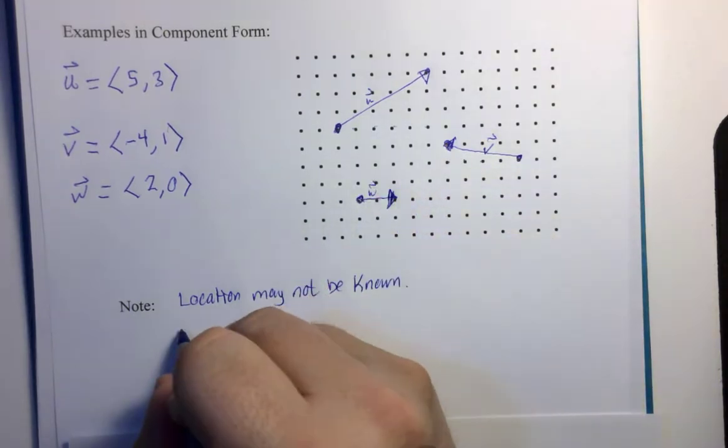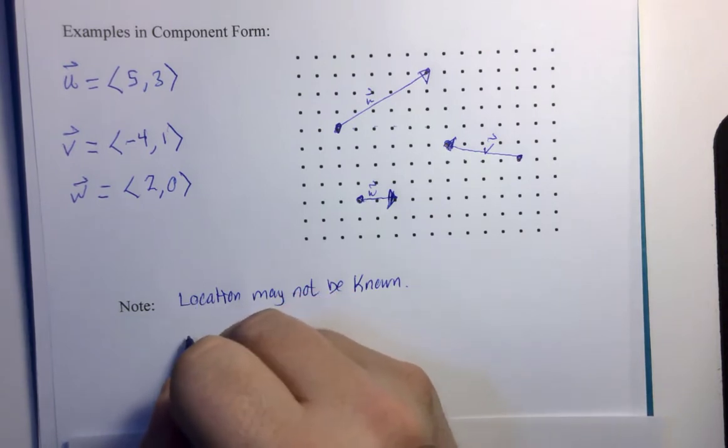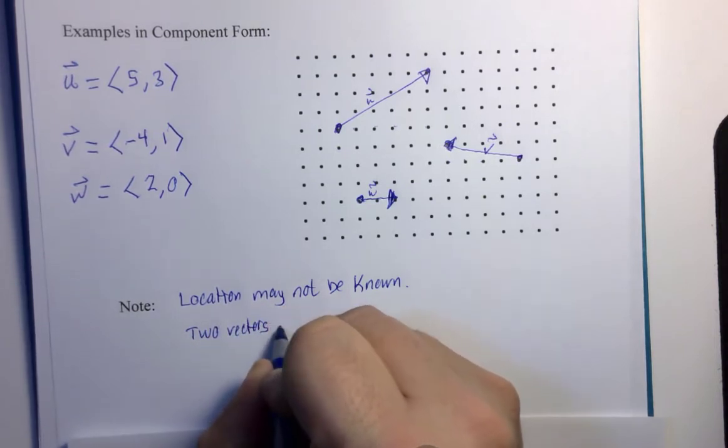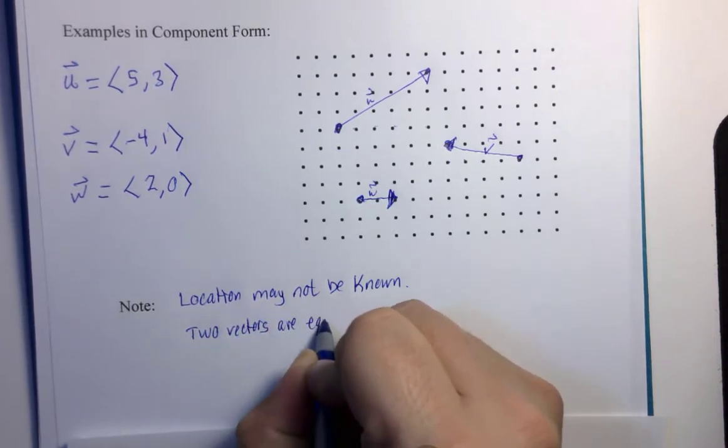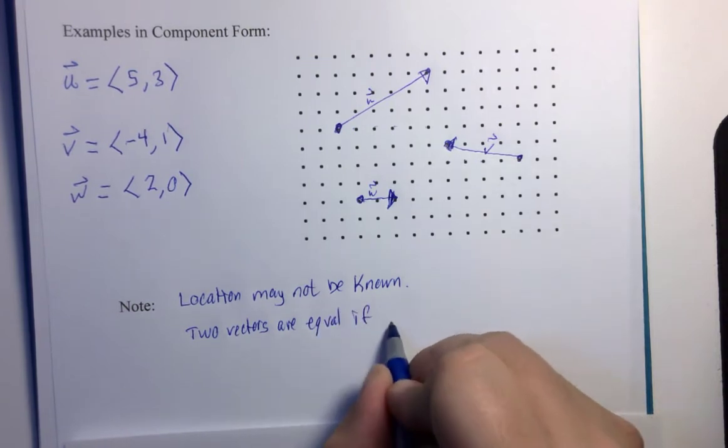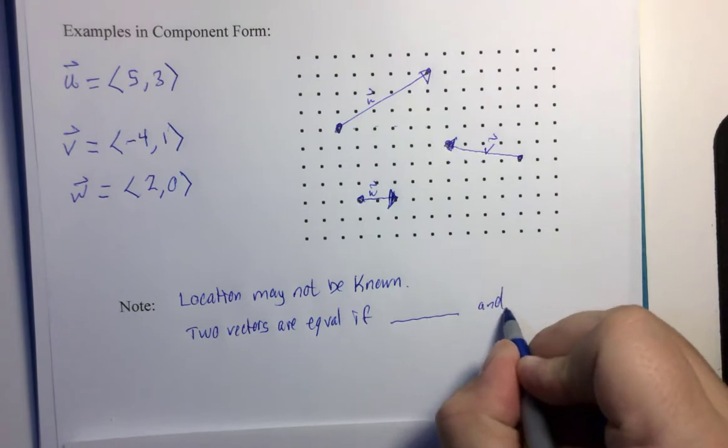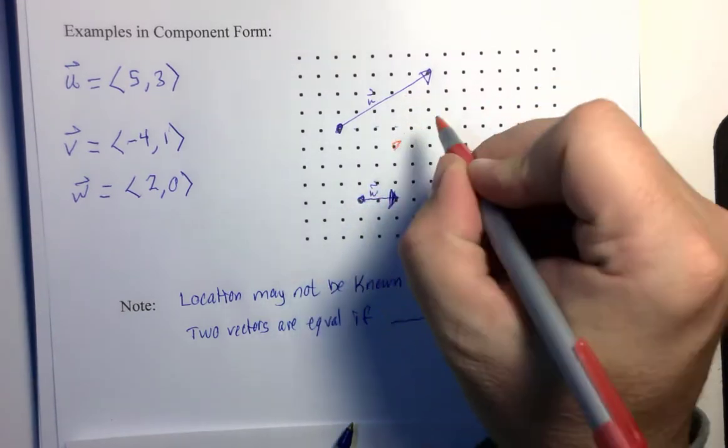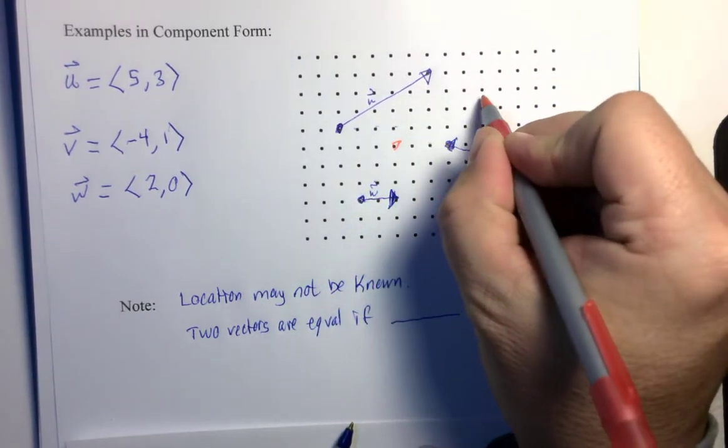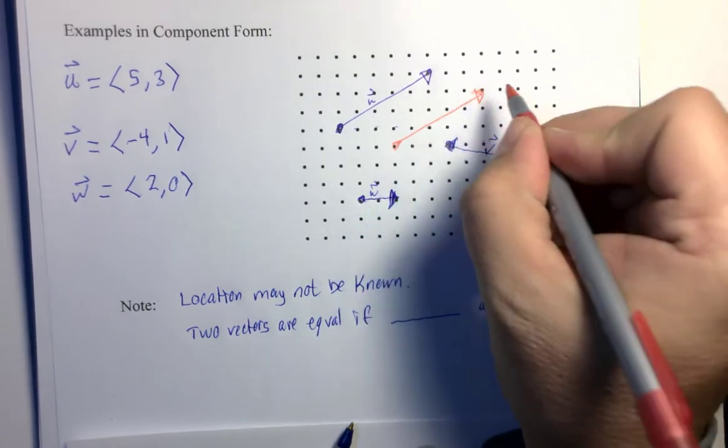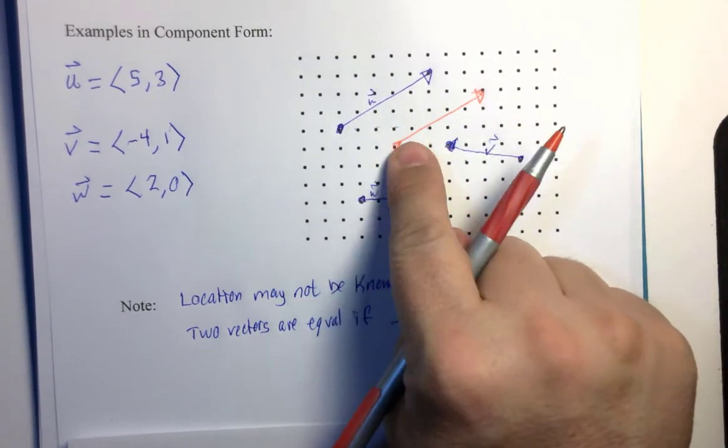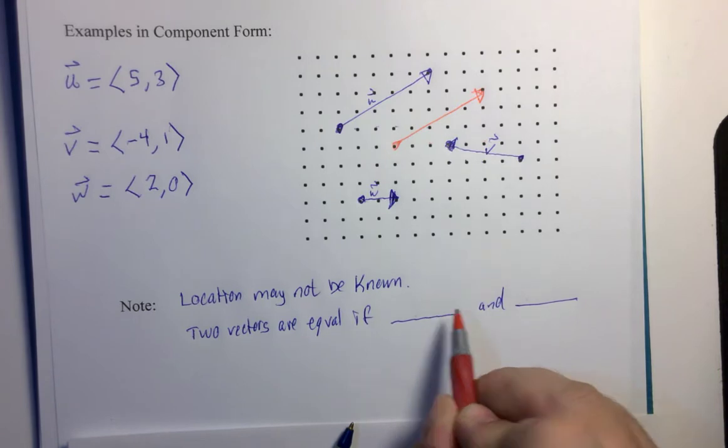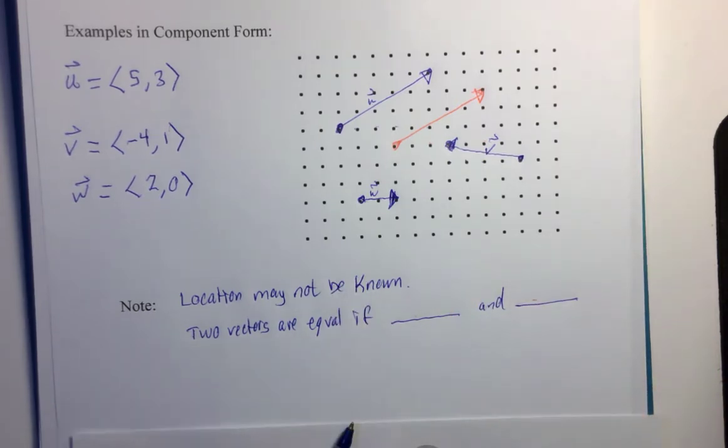Secondly, if you want to know if two vectors are equal, they have to have the same direction and the same magnitude. So, I could start here, 1, 2, 3, 4, 5, 1, 2, 3. And this would be the same as vector U. Same direction, same magnitude. Okay? I'll let you fill in the blanks for that. Same direction, same magnitude, same components, lots of ways of writing that.